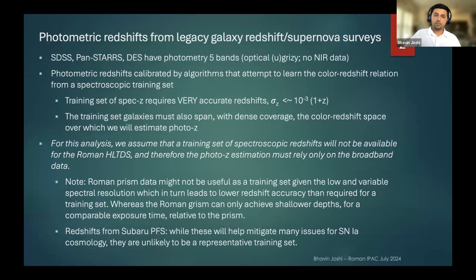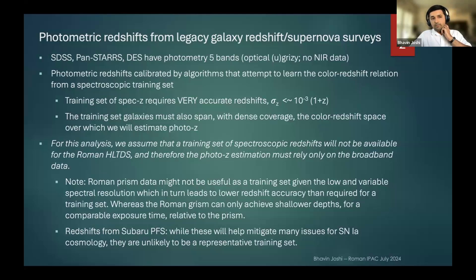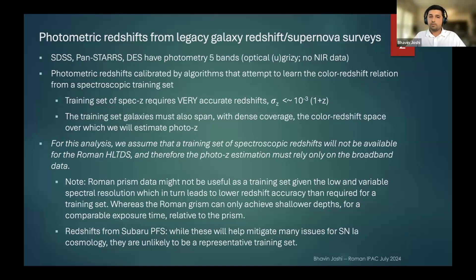Redshifts are really foundational for pretty much everything in observational cosmology and galaxy evolution. There is already a rich legacy with many mature ideas, techniques, and software packages to estimate photometric redshifts. For example, SDSS, PanSTARRS, DES — these are ground-based surveys with photometry in five bands, typically UGRIZY, and not much beyond one micron. Conventional methods to estimate photo-z typically need a training set of spectroscopic redshifts accurate to the 0.1% level, spanning the entire color-redshift space, ideally with dense coverage.